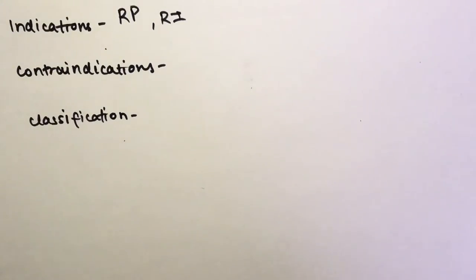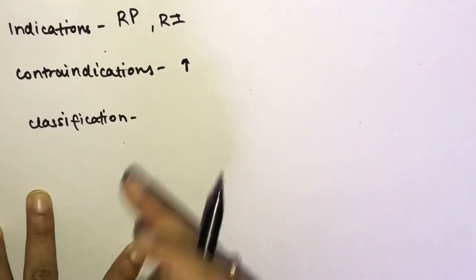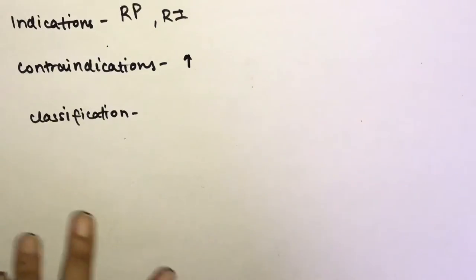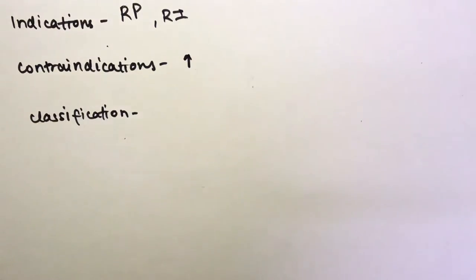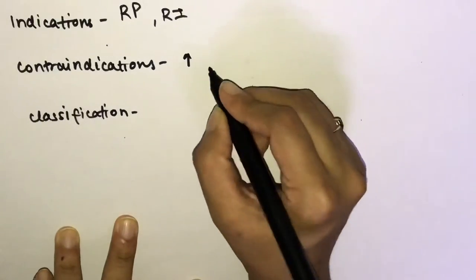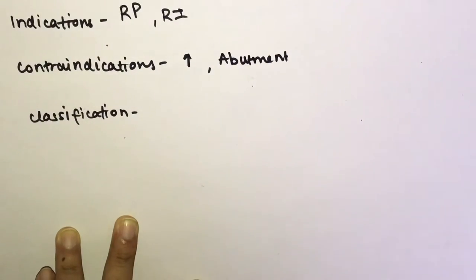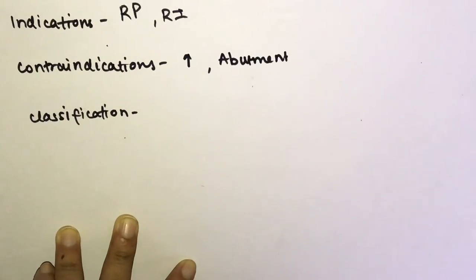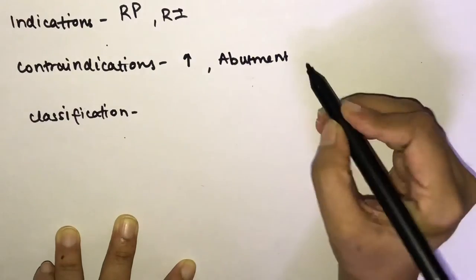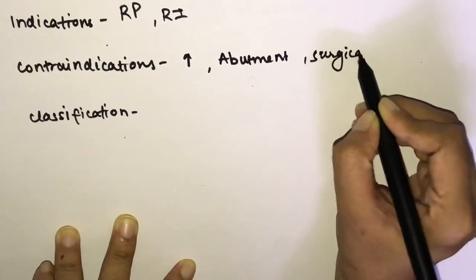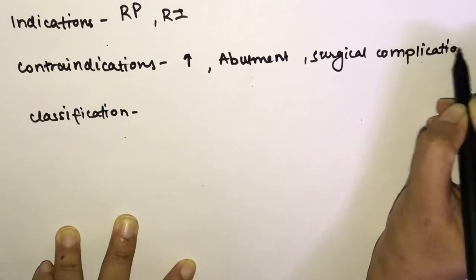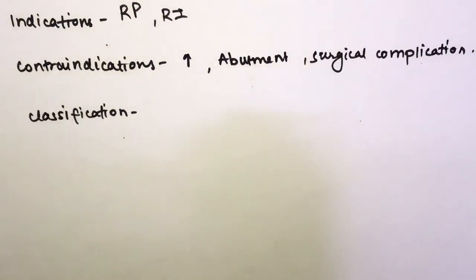Contraindications for removal include: if the impacted teeth are likely to erupt on their own; if a partially impacted tooth can be used as an abutment in RPD construction; if the patient's medical history contraindicates surgical procedures; if the tooth is deeply impacted with no history of bony pathology; and if there is a risk of surgical complications.